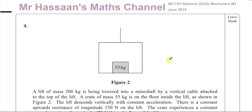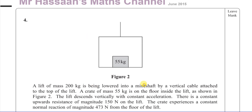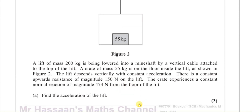We have a lift of mass 200 kilograms being lowered into a mineshaft by a vertical cable attached to the top of the lift, and there's a crate of 55 kilograms on the floor inside the lift. The lift descends vertically with a constant acceleration. There is a constant upwards resistance of magnitude 150 newtons on the lift, and the crate experiences a constant normal reaction of magnitude 473 newtons from the floor. Find the acceleration of the lift.